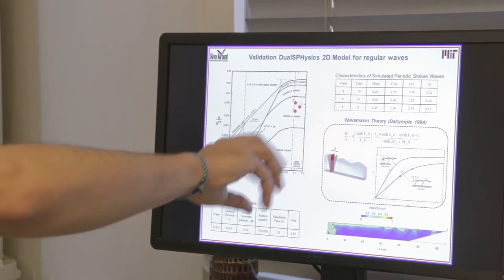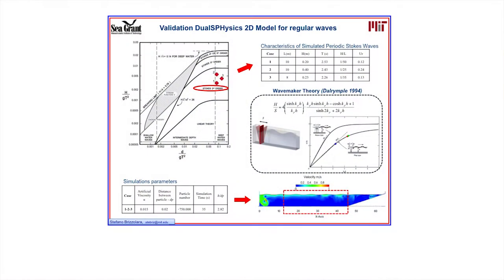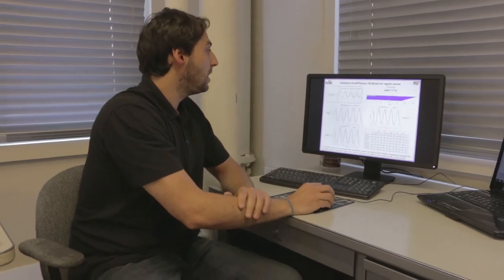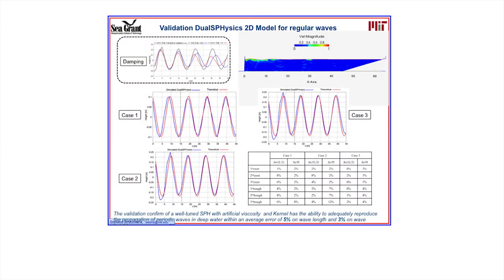We decided to take different Stokes waves and validate the model in deep water. The waves are produced with a flat motion wave maker and we validate the wave in the deep water region. We use this kind of Stokes wave and then extend the validation with different waves. The validation confirms that the well-tuned SPH model is able to reproduce second and third order Stokes waves. We find an average error of 5% in wave height and 3% in wavelength.